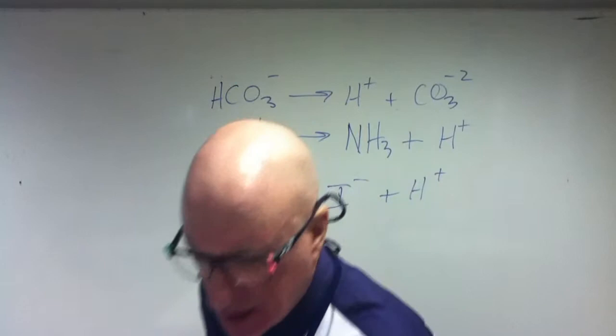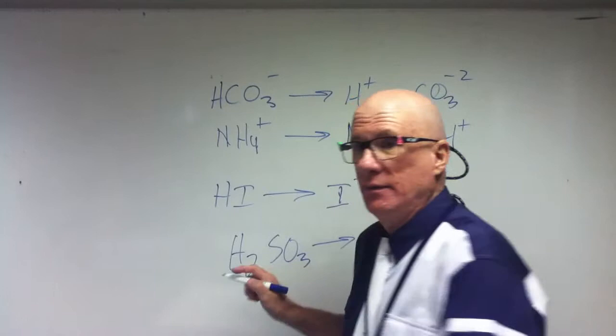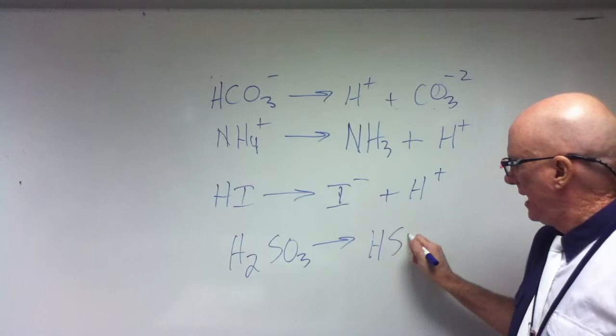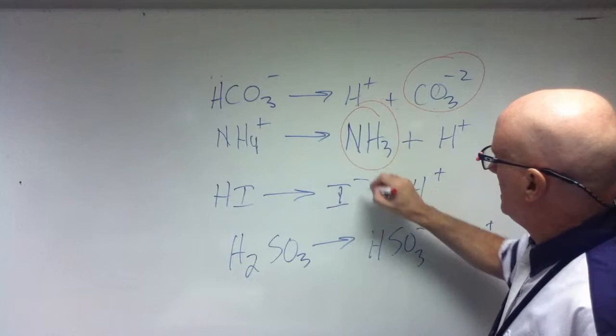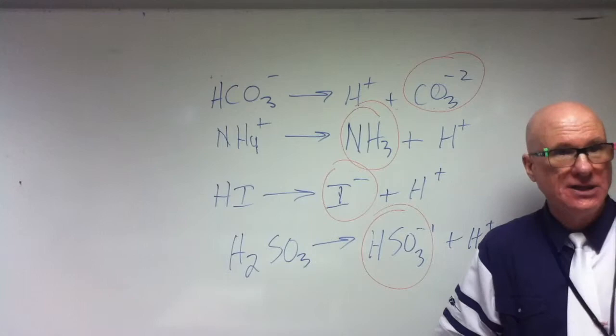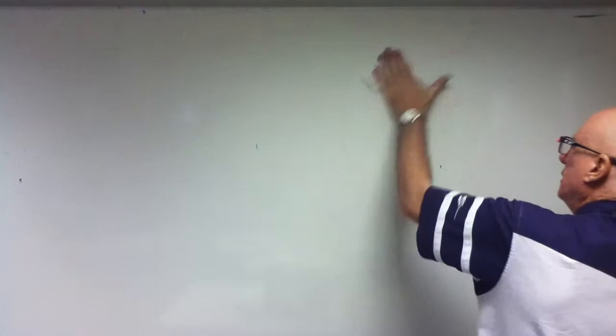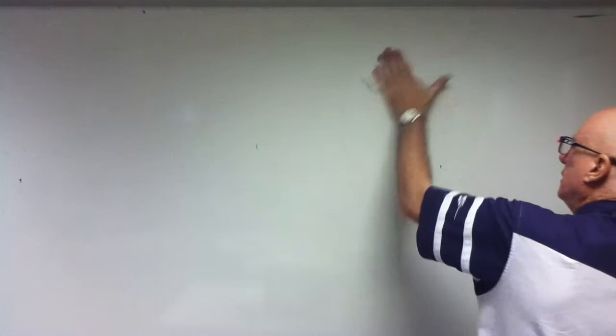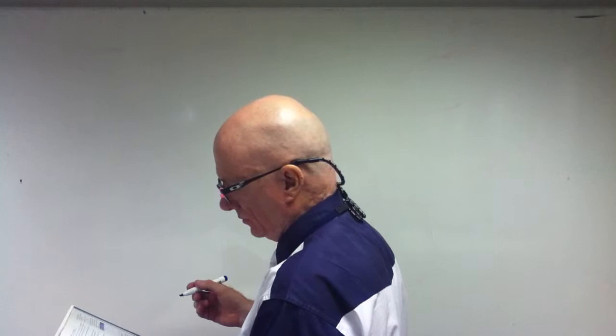The last one. HSO₃⁻ negative one. And that's going to be HSO₃⁻ plus my acid. Let's circle the conjugate bases. Now what we're going to do, without turning off the film, is write very quickly and just put the answer. We're so good at this now. I'm going to write a bunch of things here.